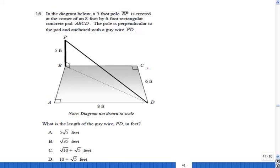In the diagram below, a 5-foot pole BP is erected at the corner of an 8-foot by 6-foot rectangular concrete pad ABCD. The pole is perpendicular to the pad and anchored with the guy wire PD. What is the length of the guy wire PD in feet?